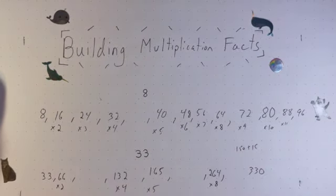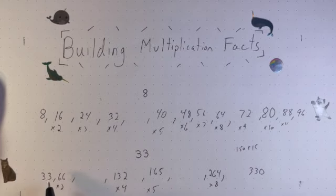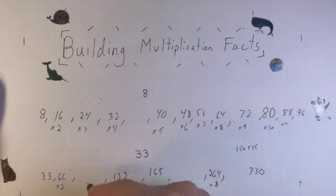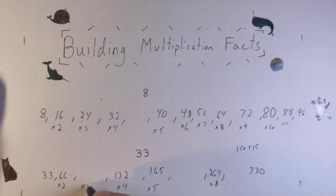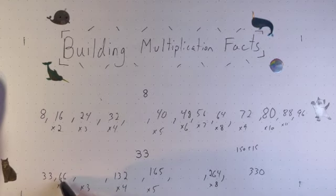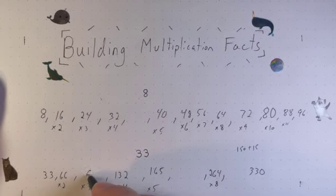So using just doubling and taking half, I'm able to fill out a good amount of this table. So the rest, I'll use addition. To get my times 3, I'll start at, well, 2 thirty-threes is 66, so one more will be 99.